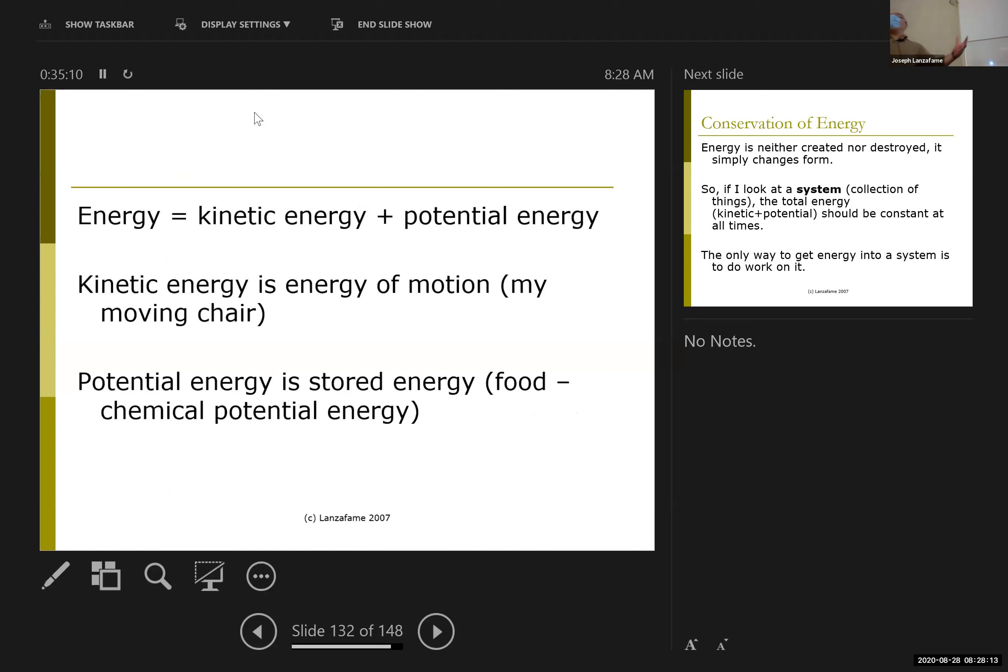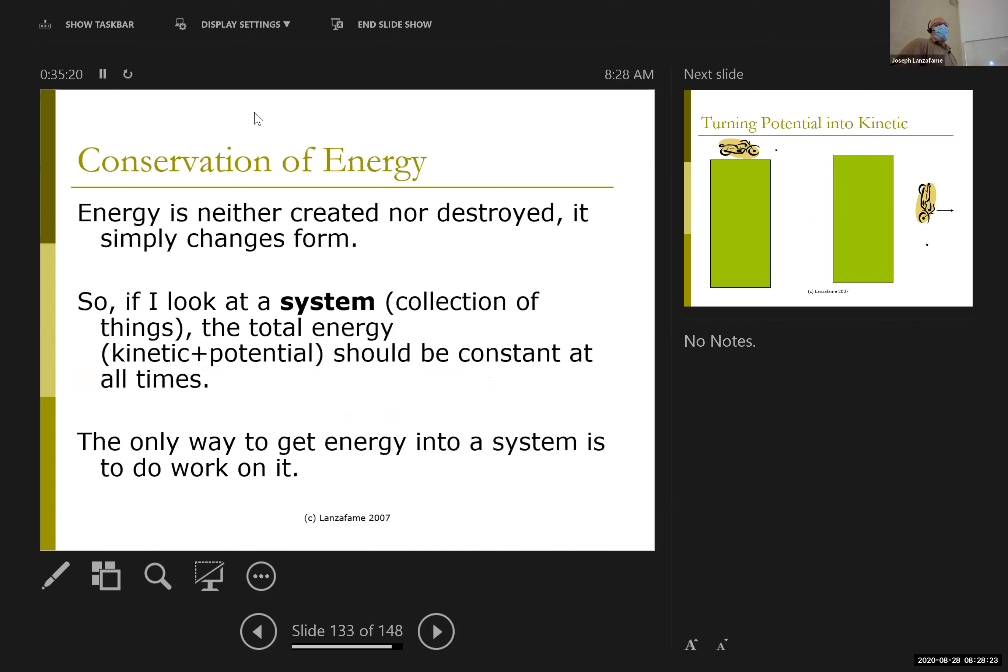The big macroscopic movement picture usually encompasses two types of energy in a physical sense as opposed to a chemical sense, and that's the old kinetic energy versus potential energy issue. The big rule, rule number one, for energy is conservation of energy.